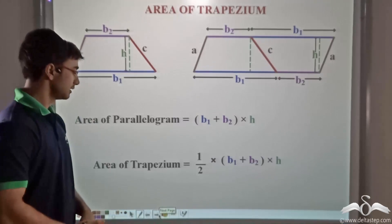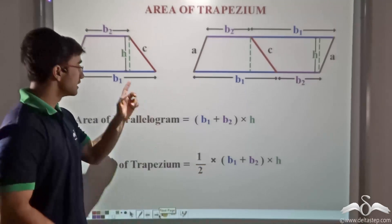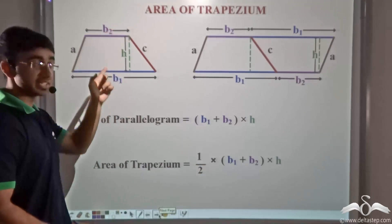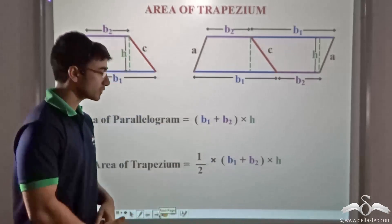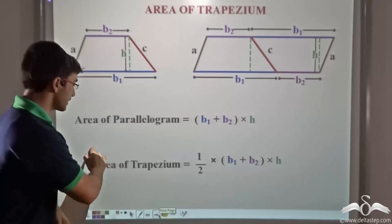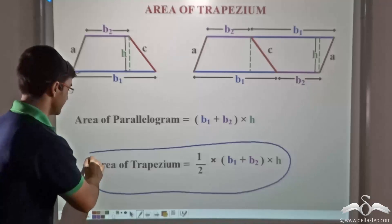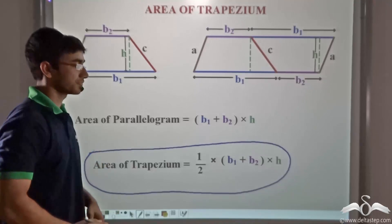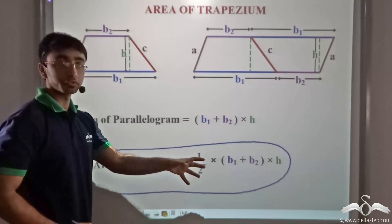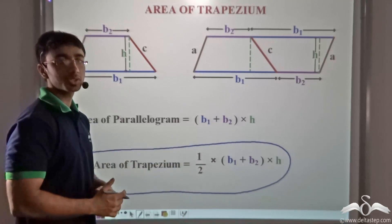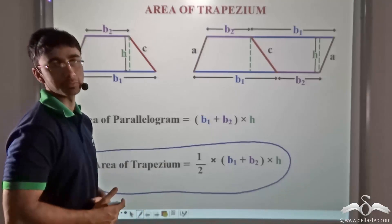Thus the area of the trapezium is half into the sum of the bases into its height. This is how we calculate the area of any given trapezium, and this is the exact amount of wood that Bob would need to construct his trapezium-shaped table.